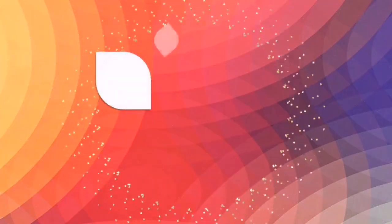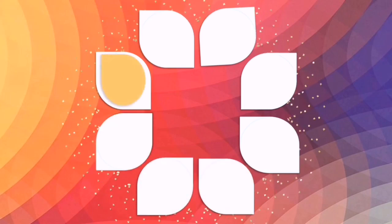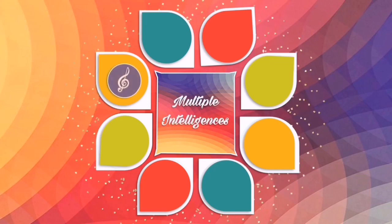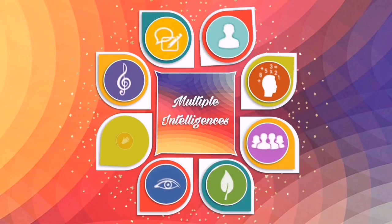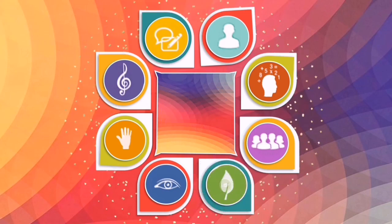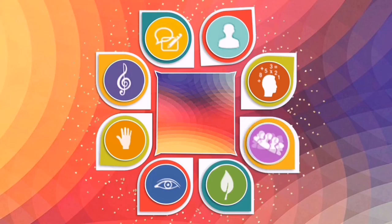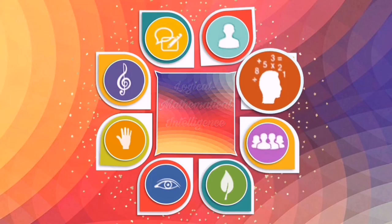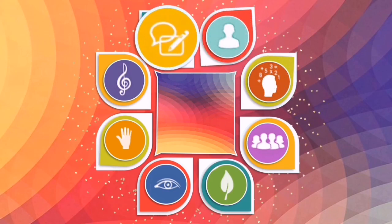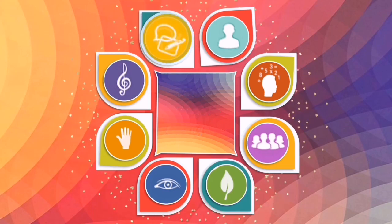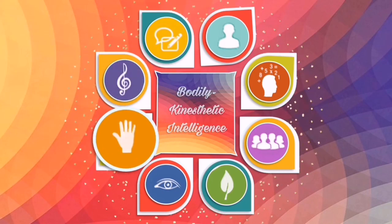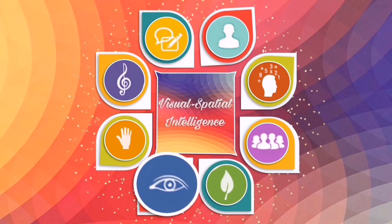As a guide to the multiple intelligences we will use for this discussion, these small icons that you will find in the upper part of the presentations are indications that our activities, tasks, or discussions will shape your naturalist intelligence, interpersonal intelligence, logical mathematical intelligence, intrapersonal intelligence, verbal linguistic intelligence, musical intelligence, bodily kinesthetic intelligence, and your visual spatial intelligence.